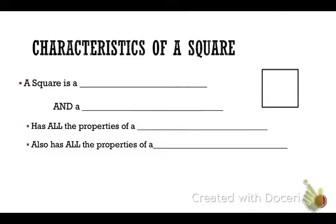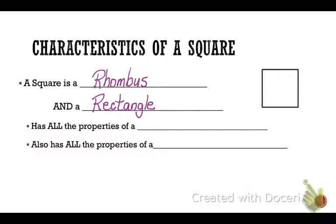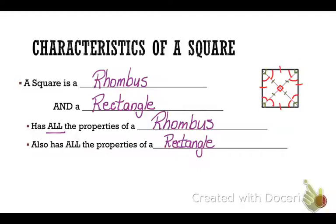The characteristics of a square are that a square is a rhombus and it is also a rectangle. So it shares all of the characteristics of a parallelogram, all of the properties of a rhombus, and all of the properties of a rectangle.